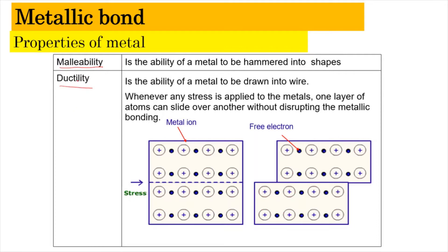Malleability is the ability of a metal to be hammered into different shapes and sizes. When knocked, the metal bends its shape to produce a variety of shapes or patterns. Ductility is the ability of a metal to be drawn into wire. When stress is applied, only one layer of atoms slides over another without disturbing the metallic bonding, so the metal can be pulled into wire.